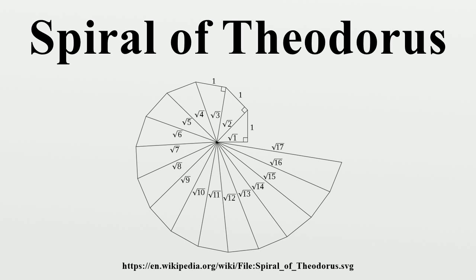The growth of the radius of the spiral at a certain triangle n follows a defined formula. The spiral of Theodorus approximates the Archimedean spiral. Just as the distance between two windings of the Archimedean spiral equals the mathematical constant pi, as the number of spins of the spiral of Theodorus approaches infinity, the distance between two consecutive windings quickly approaches pi.